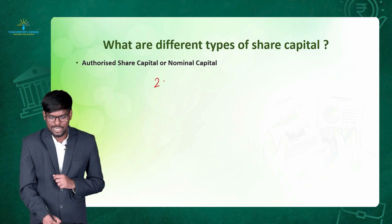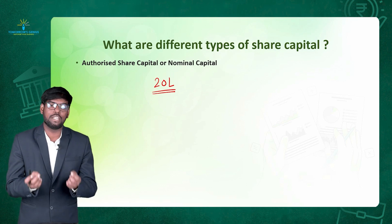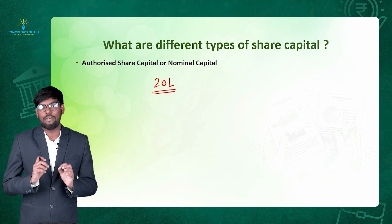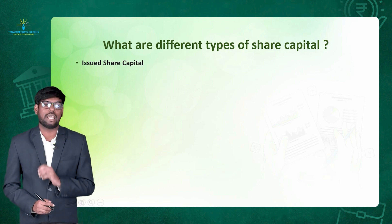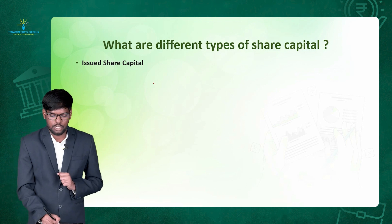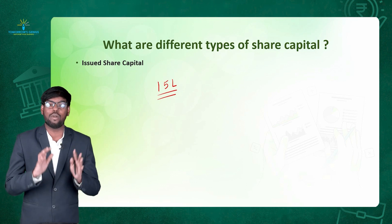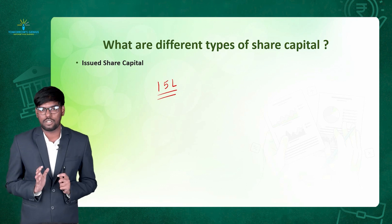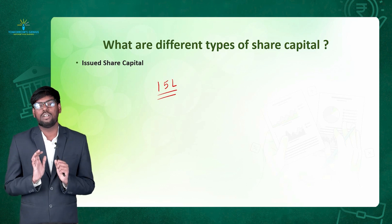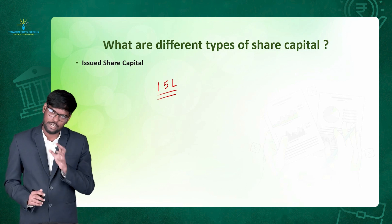In my example, a company with 20 lakh rupees of authorized capital means it has the maximum authority to collect 20 lakh rupees from the general public by way of issue of shares. The next type of capital is issued share capital. For example, a company's issued share capital is 15 lakh rupees. This means that although the company has the authority to issue and collect 20 lakh rupees, at present the company requires only 15 lakh rupees, so it is willing to collect 15 lakh rupees from the general public by way of issue of shares. That is the issued share capital of the company.